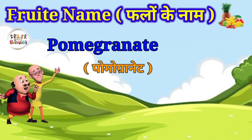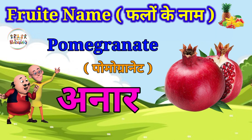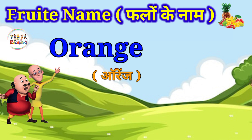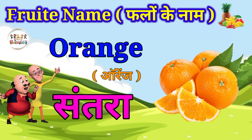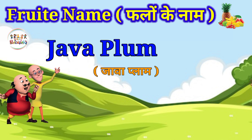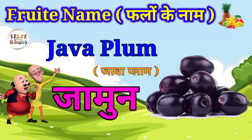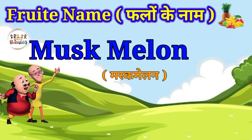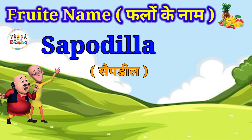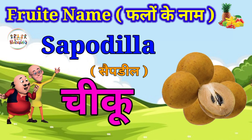Pomegranate means Anar. Orange means Santra. Plum means Jamul. Muskmelon means Kharbooja. Sapodilla means Chiku.